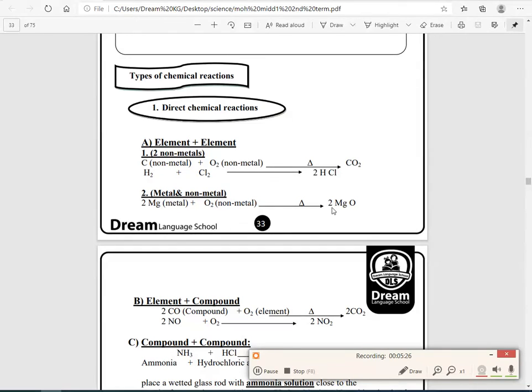Metal and non-metal: 2Mg, which is metal, plus O2, which is non-metal, will give us 2MgO.